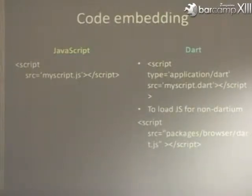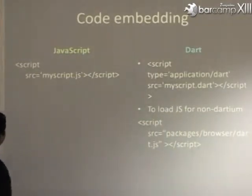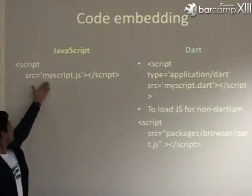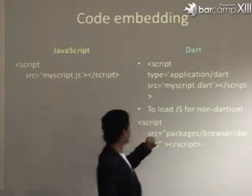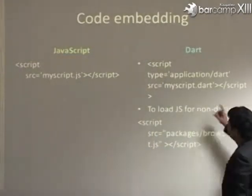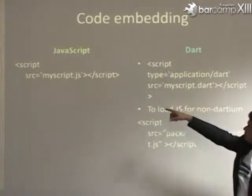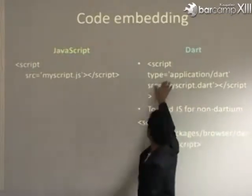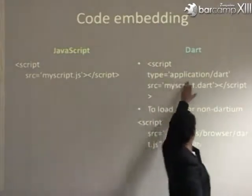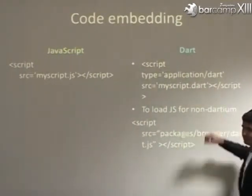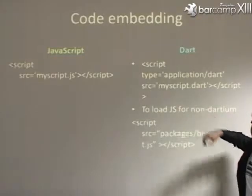First, embedding the code. Suppose you are using JavaScript — in your application you write a script tag with an SRC attribute, give the link to your JavaScript file, and it is loaded. In Dart also, you write the script tag, but instead of text/javascript you have to mention application/Dart, and after that the SRC pointing to your Dart file.